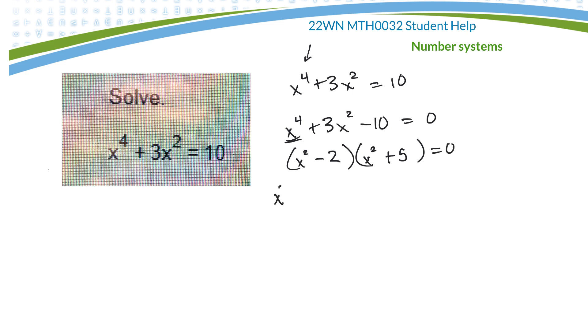Now, if it's equal to 0, I can go x squared minus 2 equals 0, or x squared plus 5 is equal to 0.